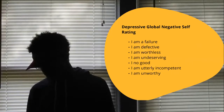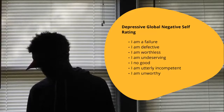Because if the default mode network creates, through rumination and over-focus on negative thoughts, then an individual can develop global negative self-ratings — as discussed in REBT and CBT — such as 'I'm a failure,' 'I am defective,' 'I am worthless,' 'undeserving,' 'I'm no good,' 'I'm utterly incompetent and unworthy.' In REBT we work on these. It's fascinating to look at the relationship between depression and the default mode network and its implications for interventions that may help depressed clients.